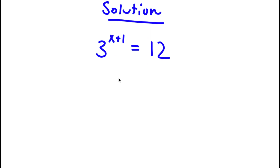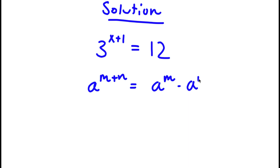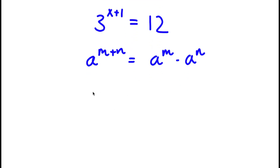Now, if I have something in the form a to the power of m plus n, this is equal to a to the power of m times a to the power of n. So in this case, 3 to the power of x plus 1, we can rewrite as 3 to the power of x times 3 to the power of 1, and this is equal to 12.